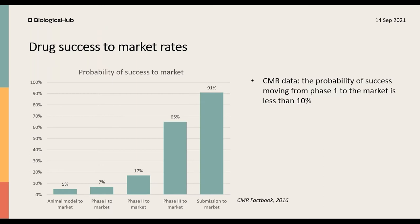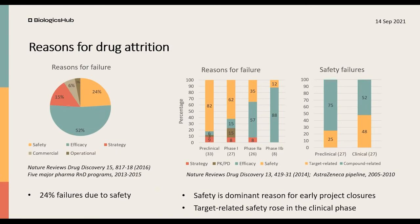Here we have a graph that shows the probability of success to market at various stages of preclinical and clinical research. This data is from 2016, and the chart is adopted from the Centers of Medical Research Study Group. The left-hand side of this graph shows that only less than 10% of all compounds that enter clinical phase one will make it to the market.